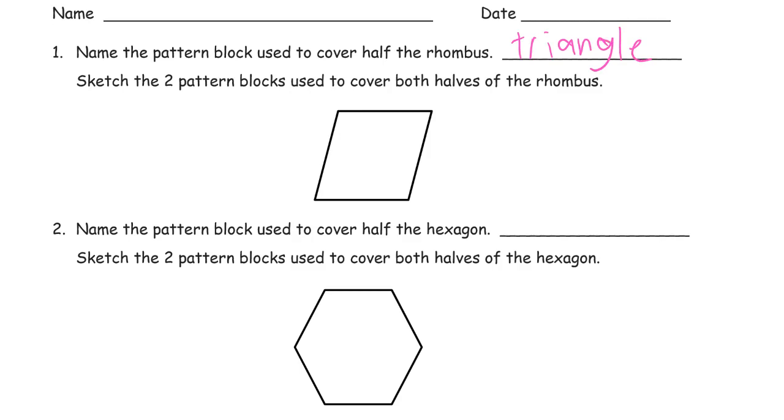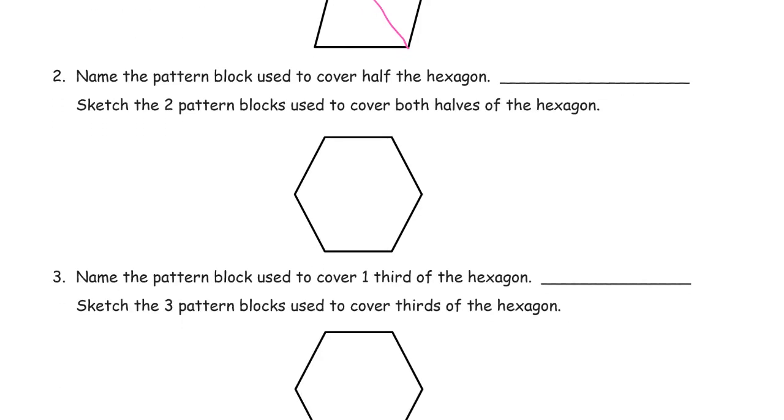And sketch them. So here's a picture of the rhombus. And if you put the two green triangles together, that's how they look.